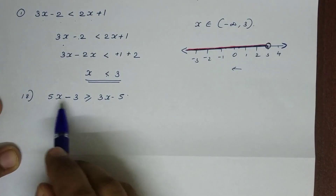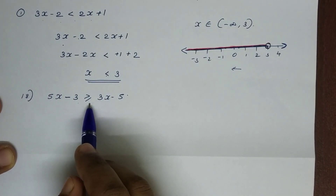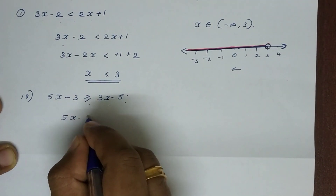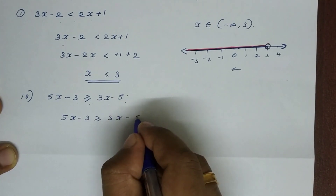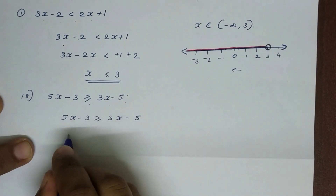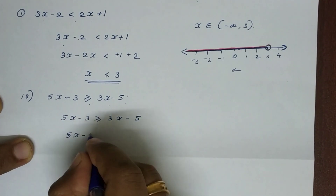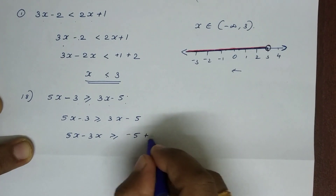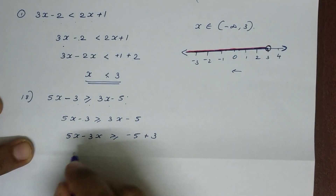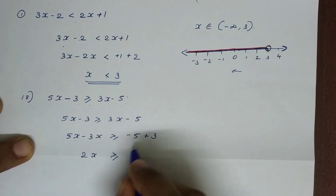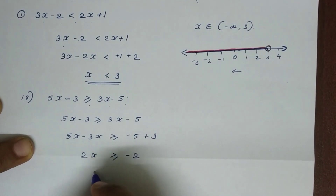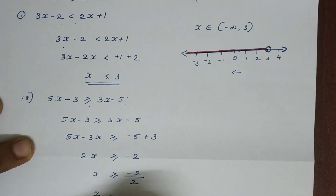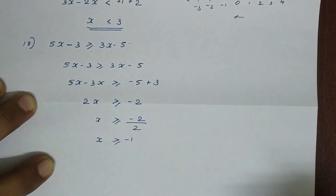18th question: 5x minus 3 is greater than or equal to 3x minus 5. We move x terms to one side: 5x minus 3x is greater than or equal to minus 5 plus 3. So 2x is greater than or equal to minus 2. Therefore x is greater than or equal to minus 2 divided by 2, which gives x greater than or equal to minus 1.